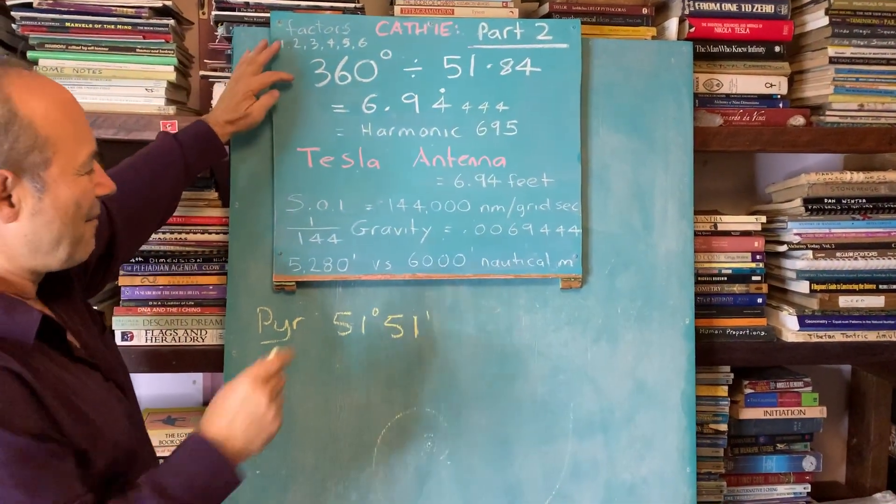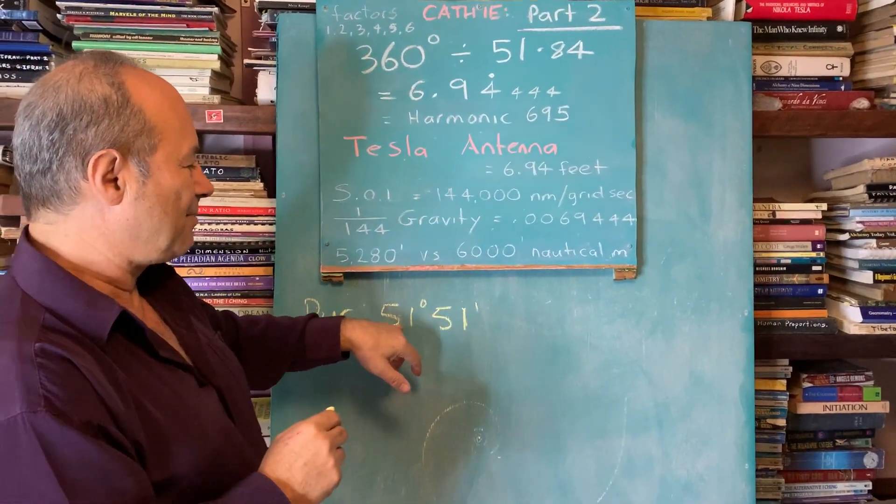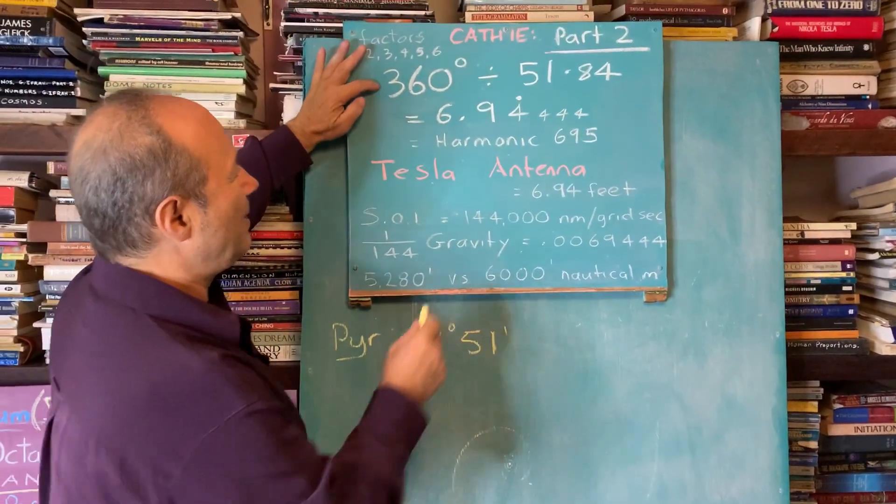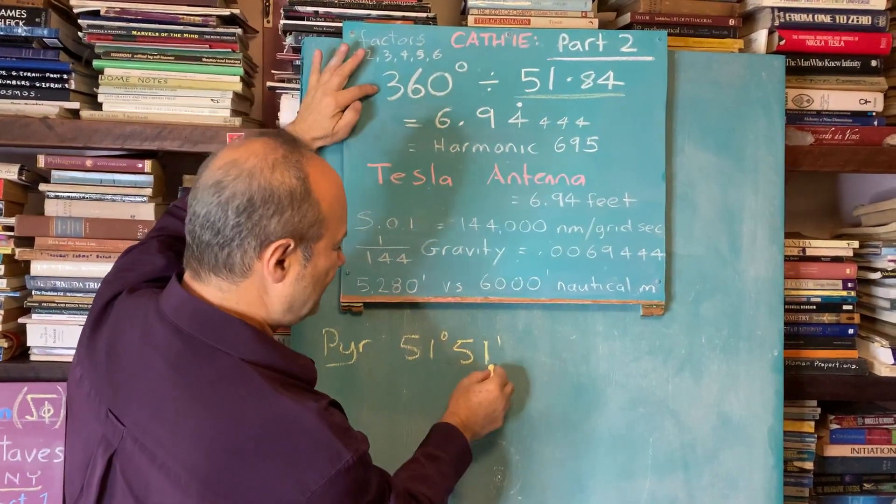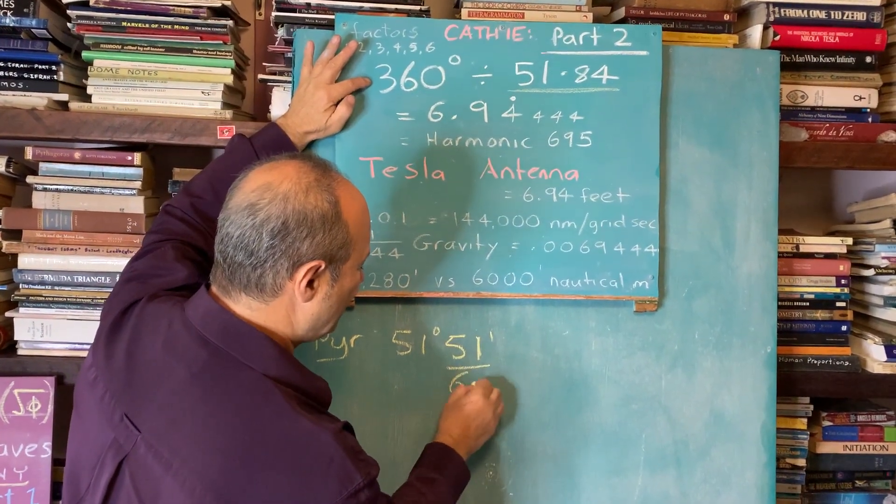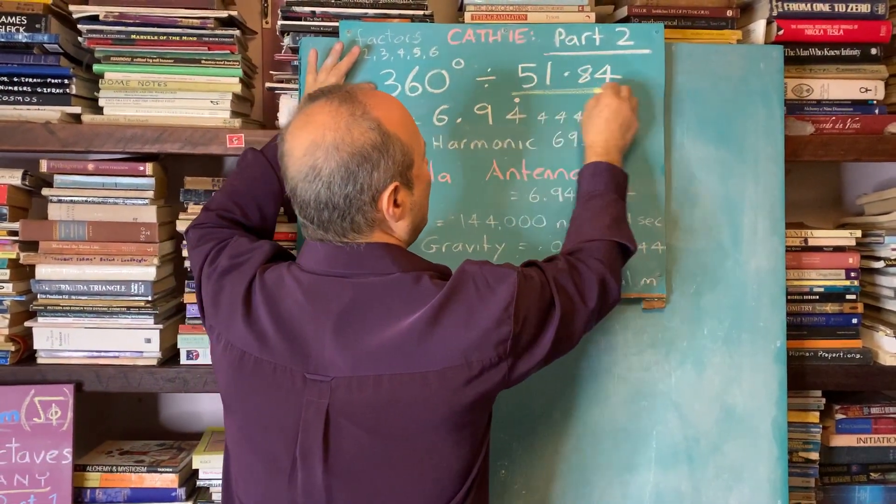From part one, we saw that the pyramid had a base angle of 51 degrees and 51 minutes. As a decimal, 51 degrees and 51 minutes is 51 over 60. The 51 over 60 minutes decimalizes to 0.84.